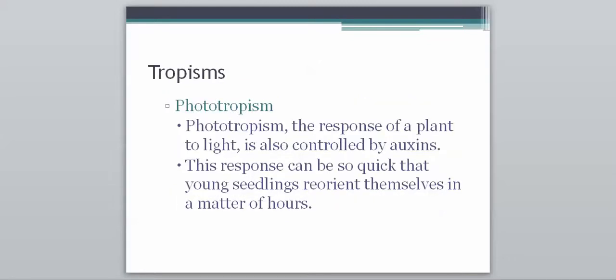And then phototropism, which remember was discovered by Charles Darwin. It was the response of a plant to light, and it is also controlled by auxins. And this response can be so quick that young seedlings will reorient themselves in a matter of hours. And reorient just means to change their position. So young seedlings, if you give them light originally, and then let's say we move the light, they can reposition themselves to get to the light in just a matter of hours. That's how strong this reaction can be.